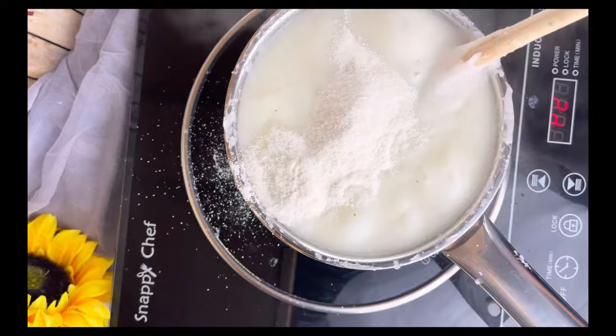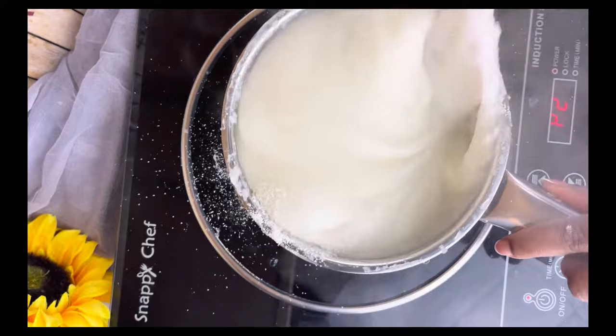And now I'm just going to be adding more maize meal. I'm only adding about one cup of maize meal. You can add more or less depending on how thick or how thin you want your pap to be.